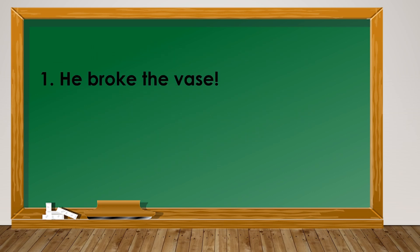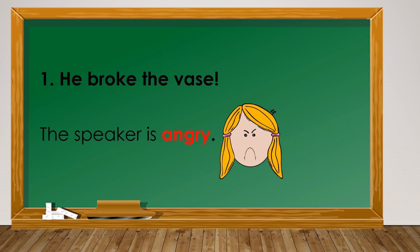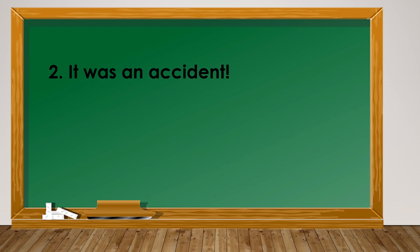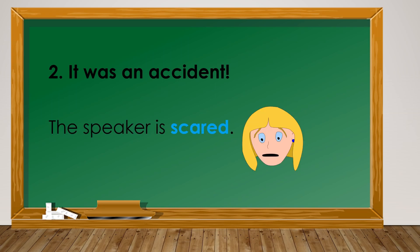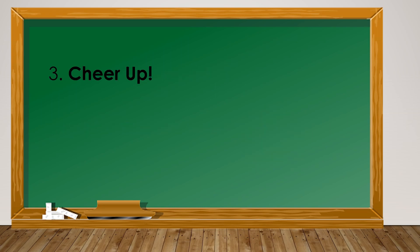Let us study the sentences once more. Number 1: 'He broke the vase.' What emotion is described? The speaker is angry. Number 2: 'It was an accident.' What emotion is described? The speaker is scared. Number 3: 'Cheer up!' What emotion is described? The speaker is happy.